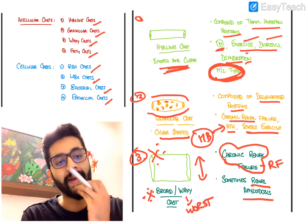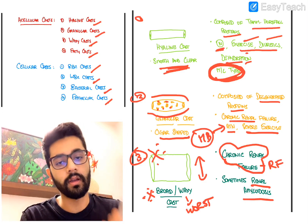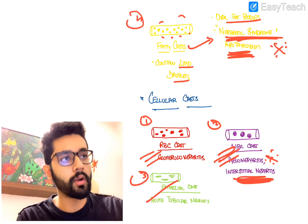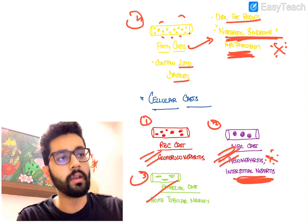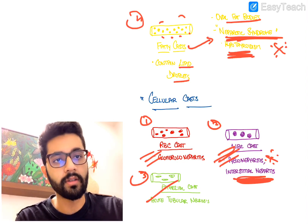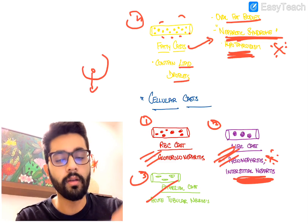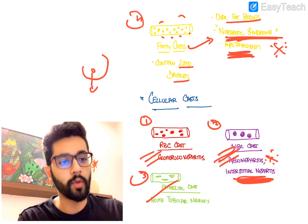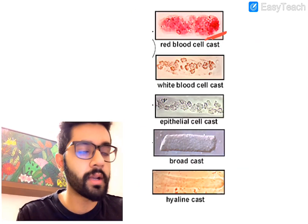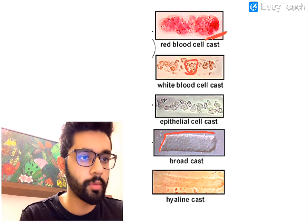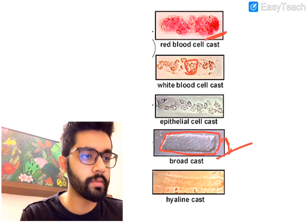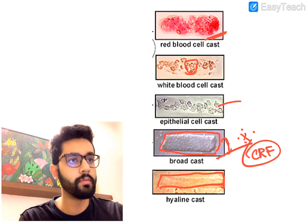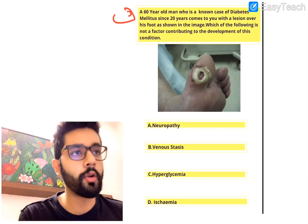Summary of casts: hyaline casts are smooth and clear, seen physiologically, with diuretics and dehydration - most common type. Granular casts are cigar-shaped; muddy brown granular casts indicate acute tubular necrosis; also seen in chronic renal failure. Broad/waxy casts indicate chronic renal failure and carry the worst prognosis. Fatty casts indicate nephrotic syndrome. RBC casts indicate glomerulonephritis; WBC casts indicate pyelonephritis; epithelial casts indicate acute tubular necrosis.